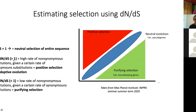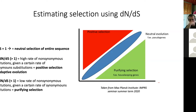High DN/DS — greater than 1 — means there are more non-synonymous mutations than synonymous mutations, implying that a change in the amino acid sequence is actually favored. This could be a result of positive selection, where changes to a protein sequence confer some kind of selective advantage, increasing the likelihood of those changes being fixed in the population. If you have a low DN/DS of less than 1, that implies purifying selection — substitutions that result in amino acid changes are resisted and removed from the population over time, and the sequence is essentially purified.